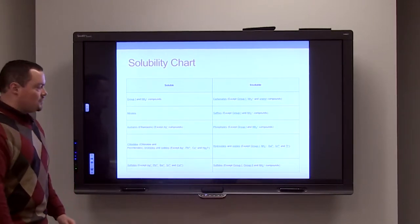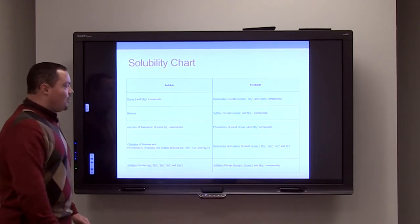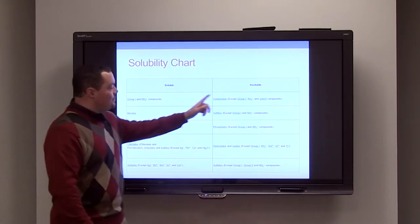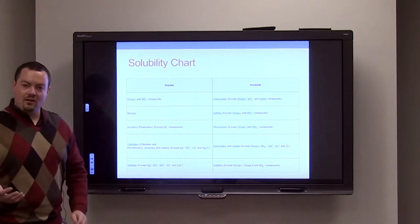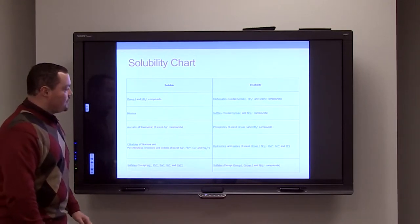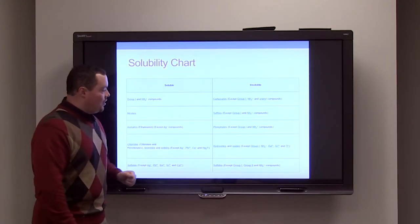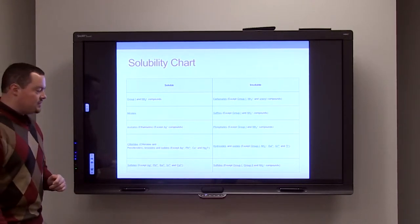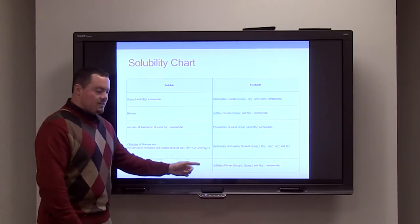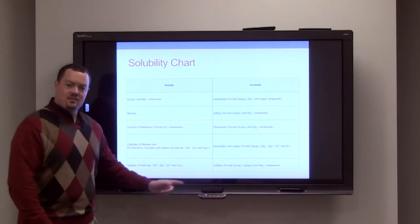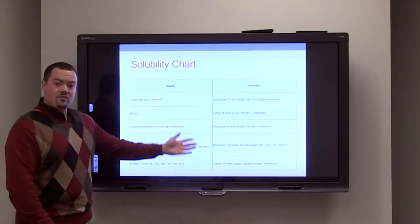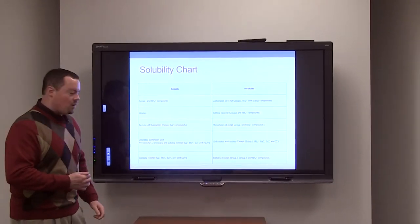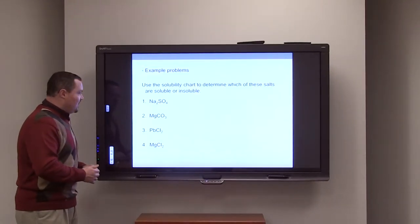On the right side of the table, we have our insoluble salts. Carbonates are insoluble except when bound to your alkali metals or ammonium ions. Sulphites are insoluble. Phosphates, hydroxides, oxides, and sulfides are insoluble with certain exceptions.